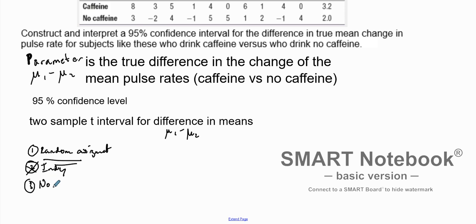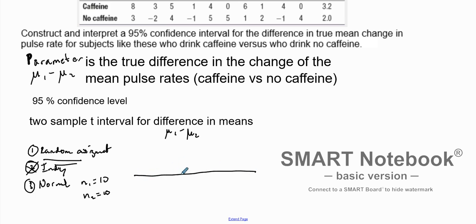Next we just have to test if it's normal. Unfortunately, our two sample sizes n1 is 10 and n2 is 10. We don't know if the population is normal and these are definitely not greater than 30. So what we're going to do is just quickly graph these to see if there are any outliers. We set up a number line going from negative four to about ten, and we graph the caffeine group distribution.